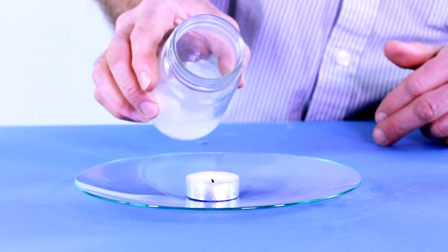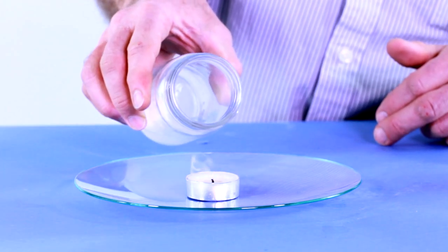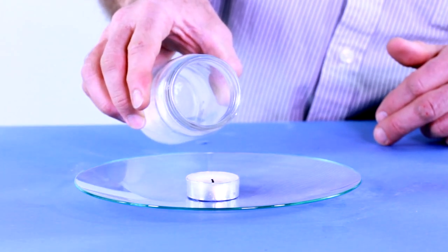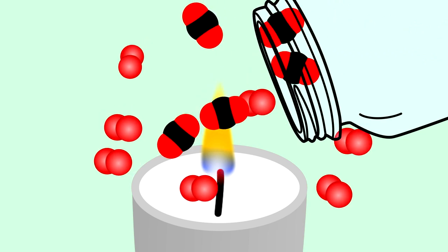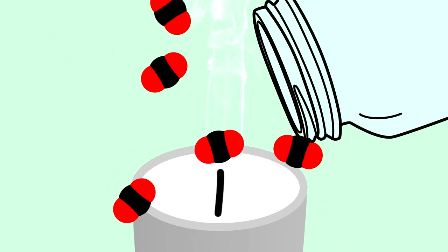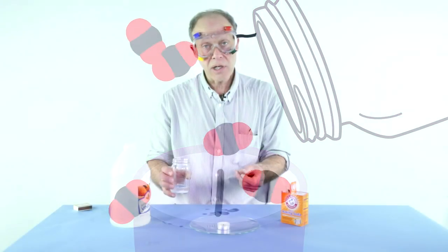Now, the reason why that happens is because the carbon dioxide is heavier than the air. And it comes out of the jar. And as it flows over the flame, it pushes the oxygen out of the way.